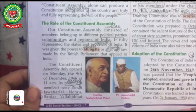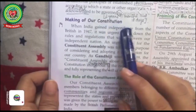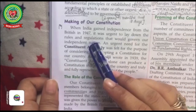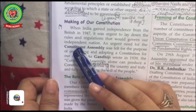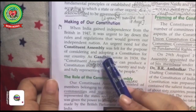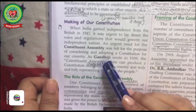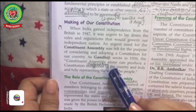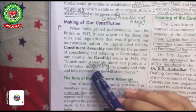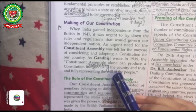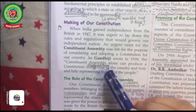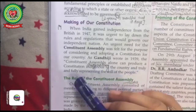Take out page number 128 — Making of Our Constitution. When India gained independence from the British in 1947, it was urgent to lay down the rules and regulations that would govern our independent nation. An urgent need for the Constituent Assembly was felt for the purpose of considering and adopting a constitution for our country. As Gandhiji wrote in 1939, the Constituent Assembly alone can produce a constitution indigenous to the country and fully and truly represent the will of the people. 'Indigenous' means originating from the characteristics of the country.